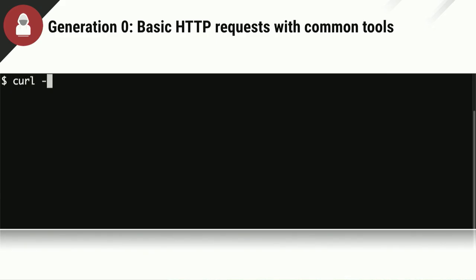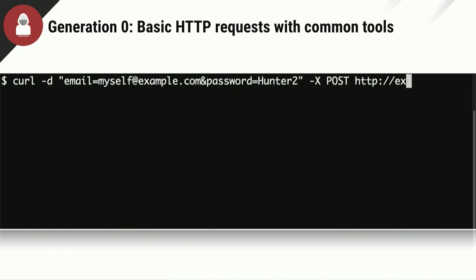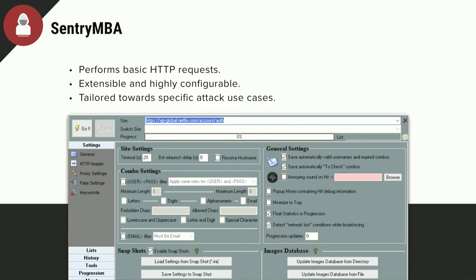So how is credential stuffing actually evolving? This has been a problem for a very long time. At the start, remember — cost versus value, incentive versus adversity — there was nothing blocking you. A lot of early attacks were just curl and wget. There was nothing forcing you to do anything different. It was quick, it was everywhere, very easy to do. Basic HTTP request attacks gained ground very quickly, and you had tools like Sentry MBA which optimized for this attack case, just issuing straight HTTP requests, automating the ingestion of combo lists and going through proxies.